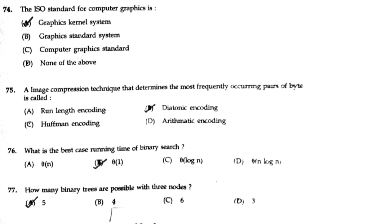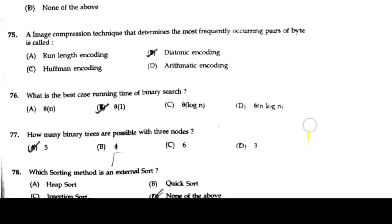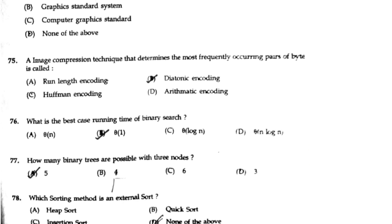How many binary trees are possible with three nodes? Answer option A: 5.